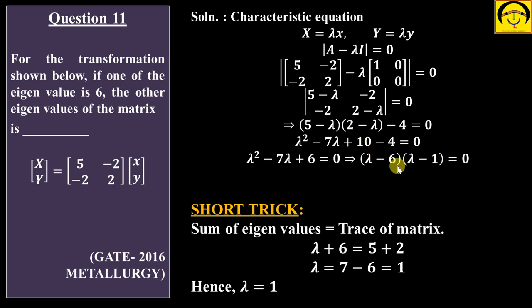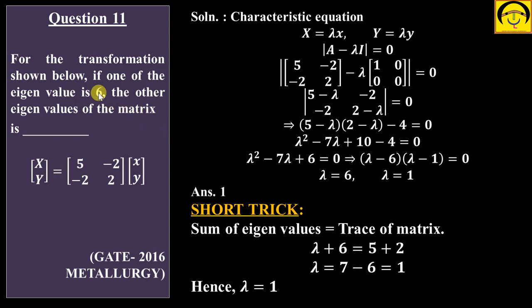So λ equals either 6 or 1. Since the question already gave one eigenvalue as 6, the other eigenvalue is 1. This confirms the short trick answer.